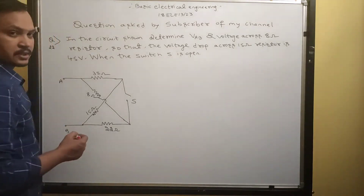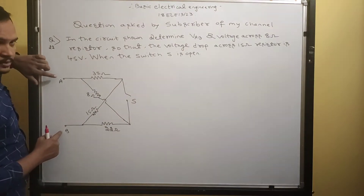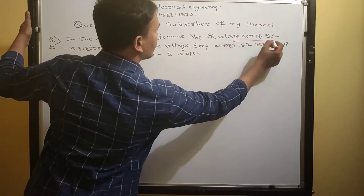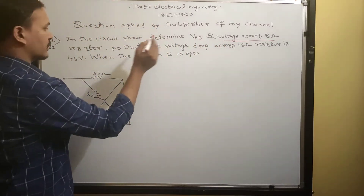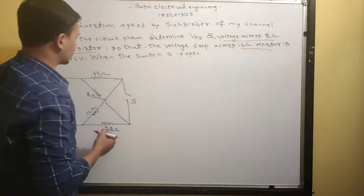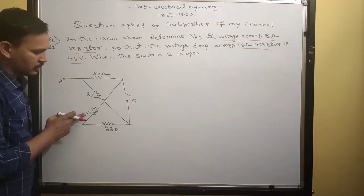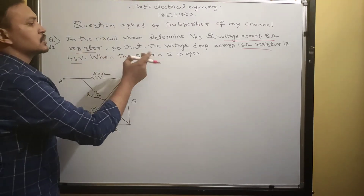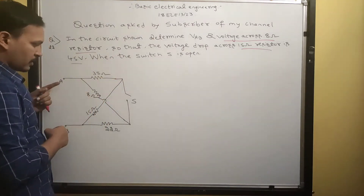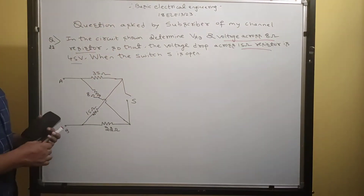Let's see what question they asked. In the circuit shown, determine VAB — we have to find voltage across the terminals A and B. They are given voltage across 8 ohm, and they are also asking to determine voltage across 8 ohm resistance. They are given that the voltage drop across 15 ohm resistance is 45 volts. When the switch is open, you should calculate VAB and voltage across 8 ohm resistance. This is the question asked by my subscriber.